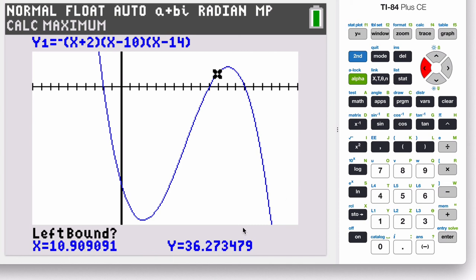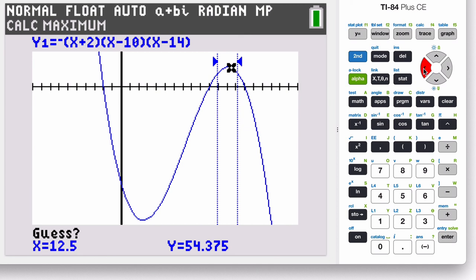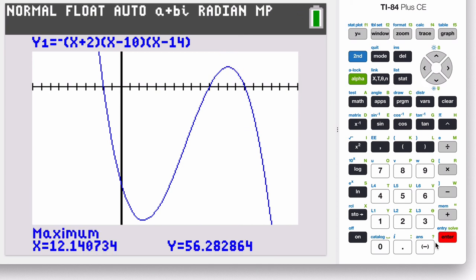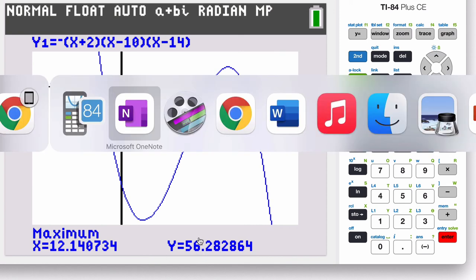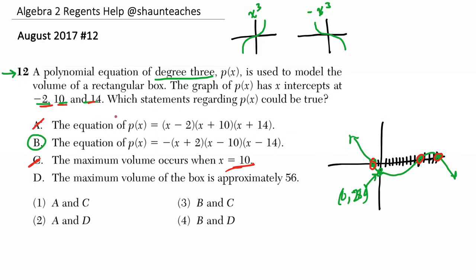I'm going to scroll to the left a little bit. It's asking me for a left bound of the max. And then go to the right. I'm just kind of sandwiching in where that max is. And it says guess. Well, it's saying for me to guess about where the maximum is. Hit enter. You can see it's about 56. So that's reasonable. And that's the maximum volume of the box. So that choice D works as well.